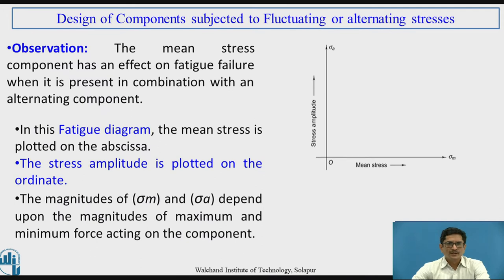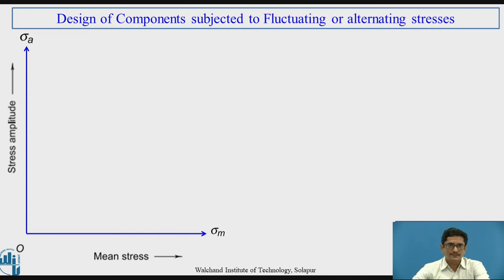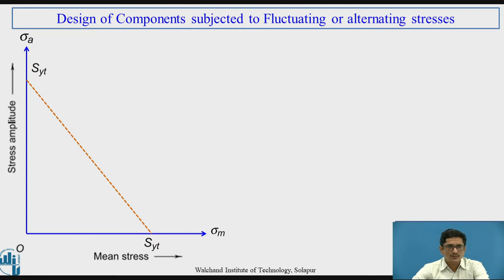We have drawn this fatigue diagram. In this fatigue diagram, the mean stress is plotted on the abscissa and the stress amplitude is plotted on the ordinate. The magnitudes of sigma m and sigma a depend upon the magnitudes of maximum and minimum stresses acting on the component. Plotting SYT on both axes and drawing a line between them gives a line making 45 degrees with both axes — this is called the yield line, representing the criterion of failure under static load by yielding.